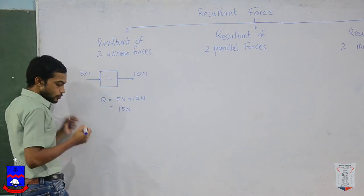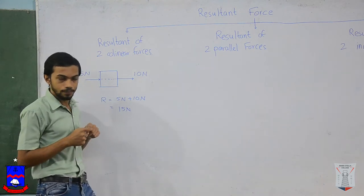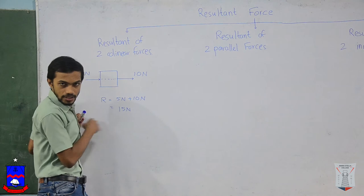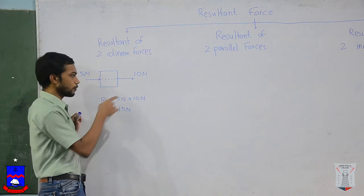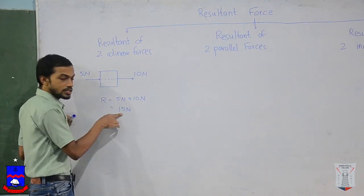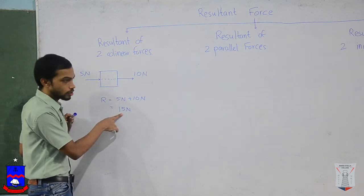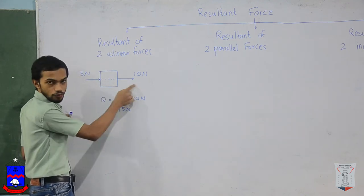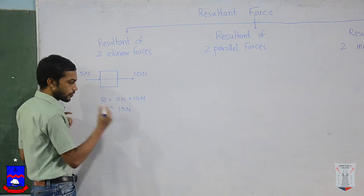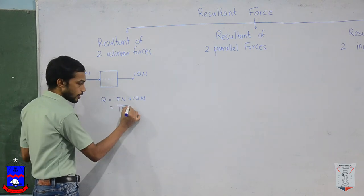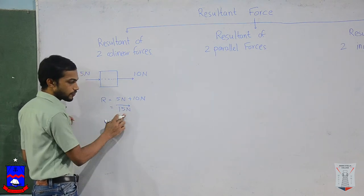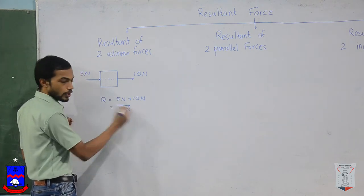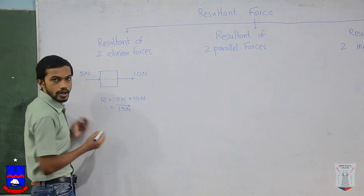Since force is a vector quantity, we should mark the direction also. The direction of the resultant force will be the same as these two forces — 15 newtons from left to right — and you can mark it with an arrow.